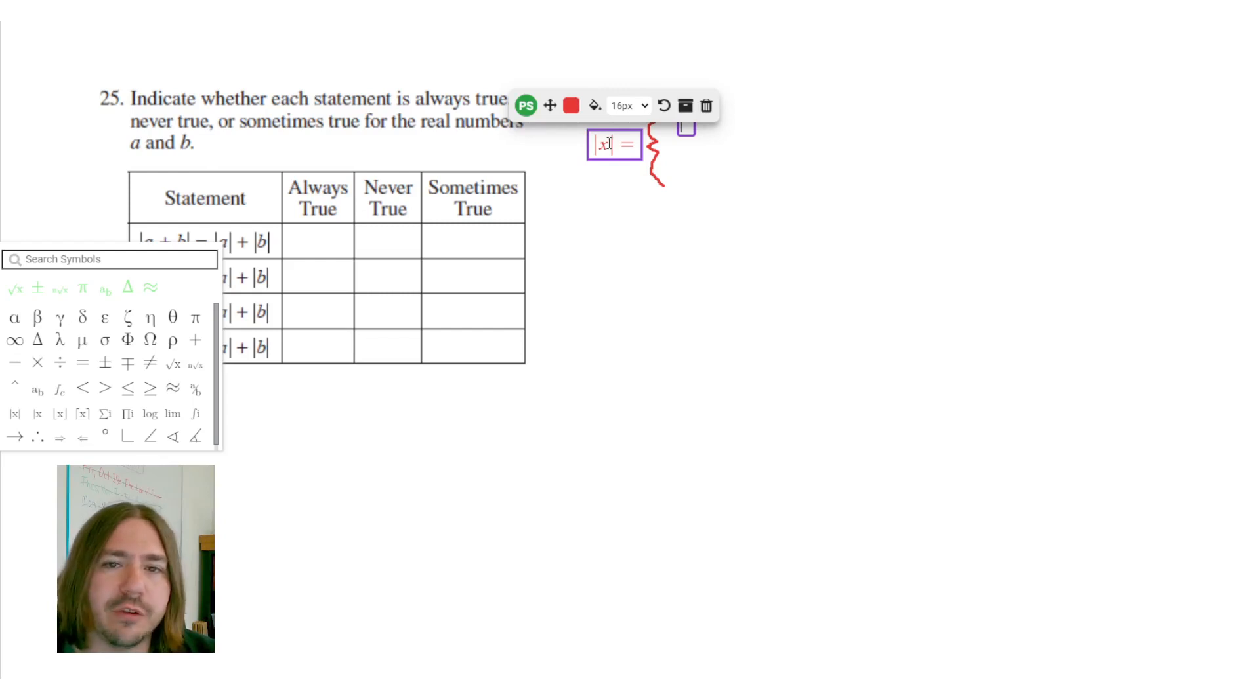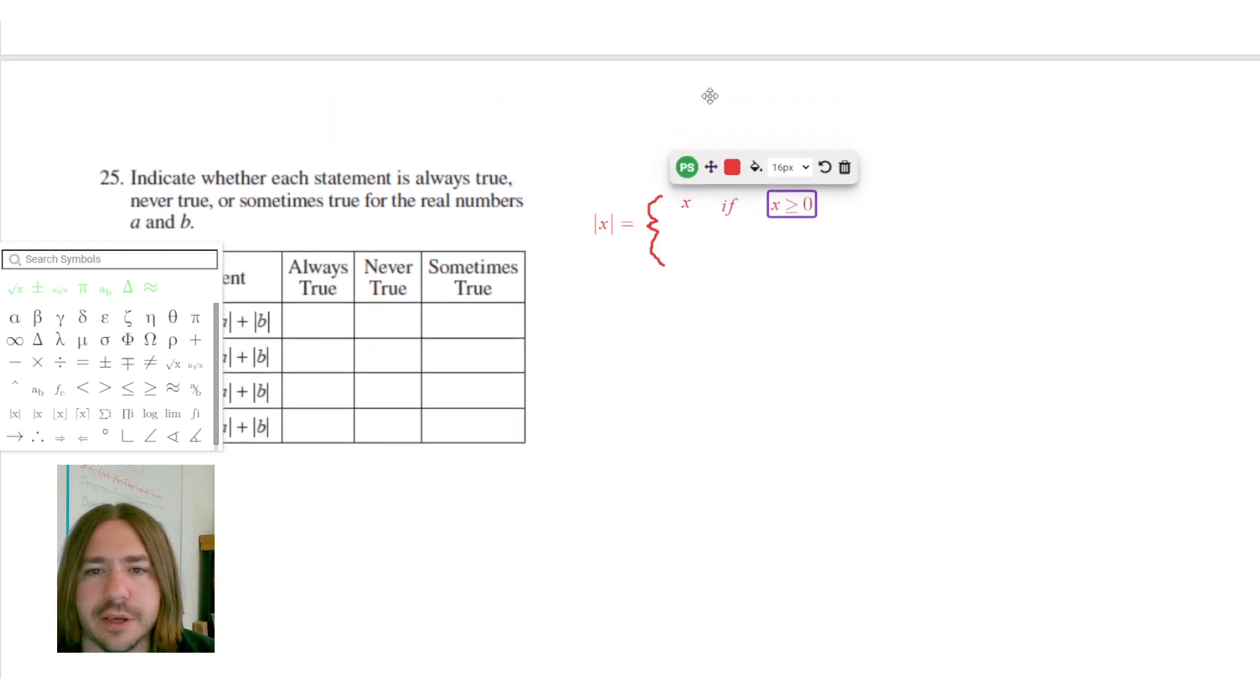If you have a positive number inside the absolute value bars, then nothing's going to change. For instance, the absolute value of 5 is still 5. So it'll just equal whatever's inside the parentheses if that number is positive or if it's zero.